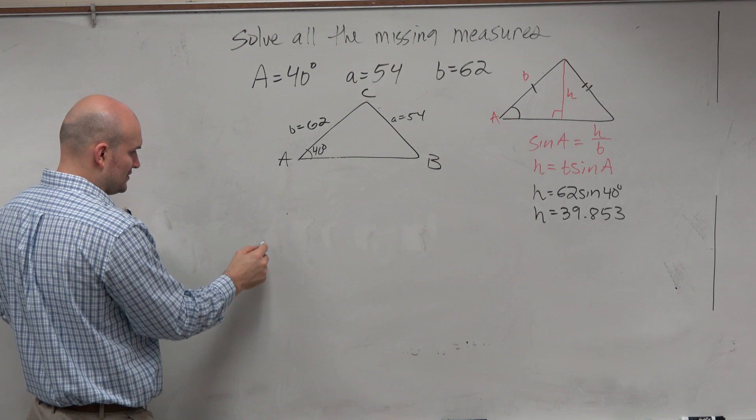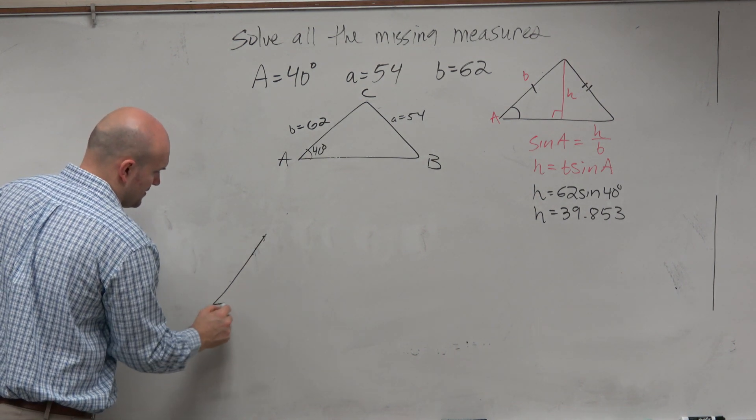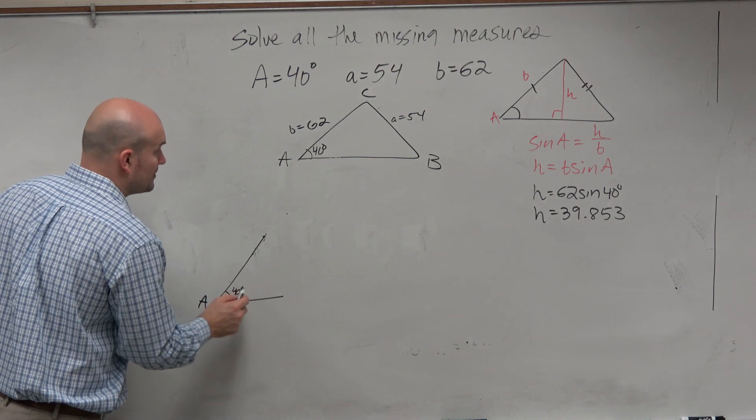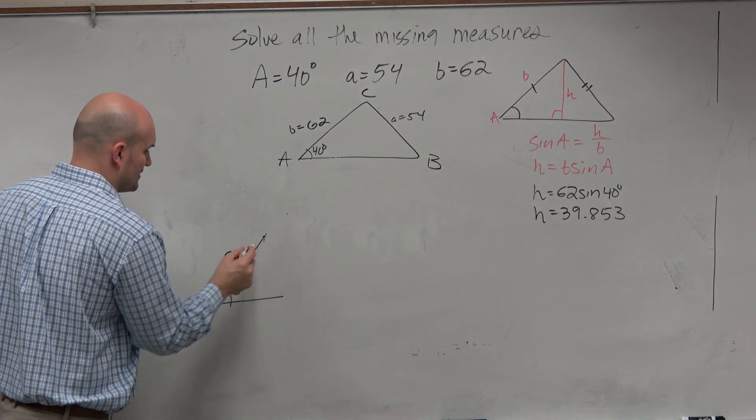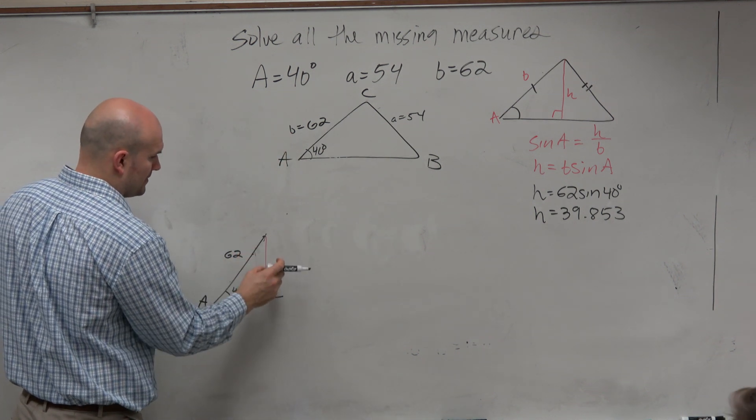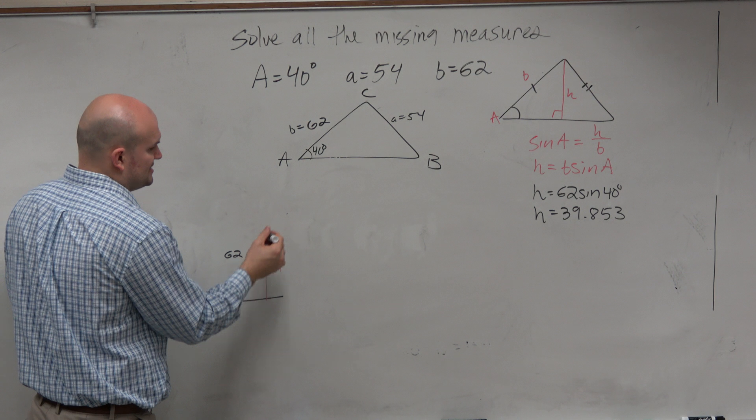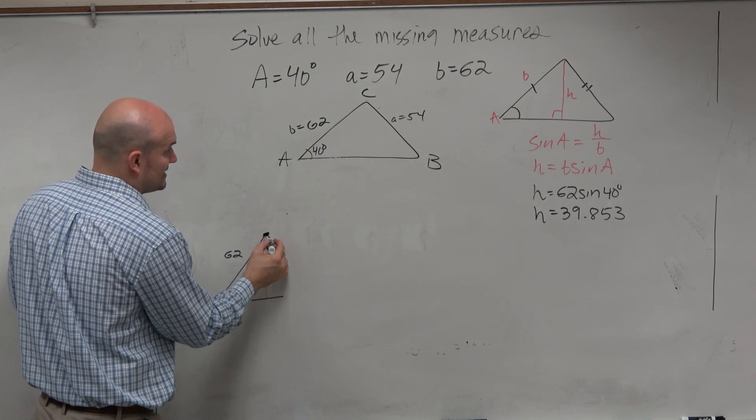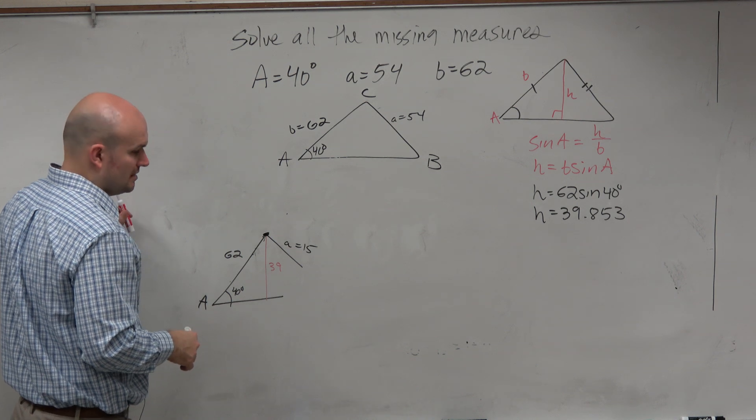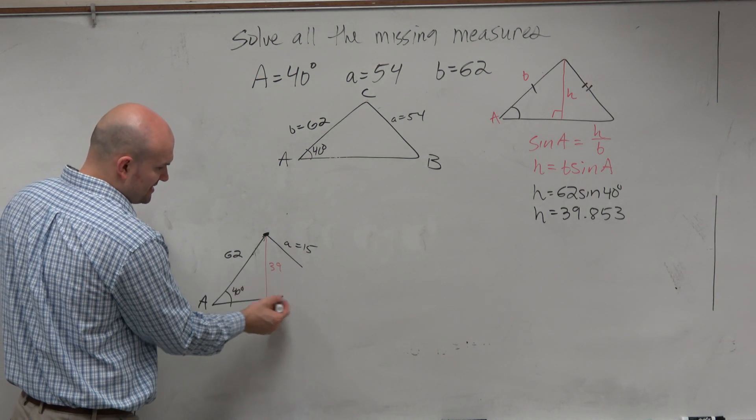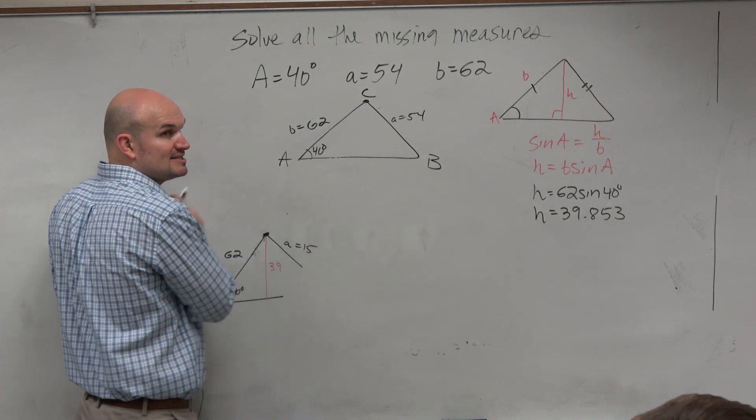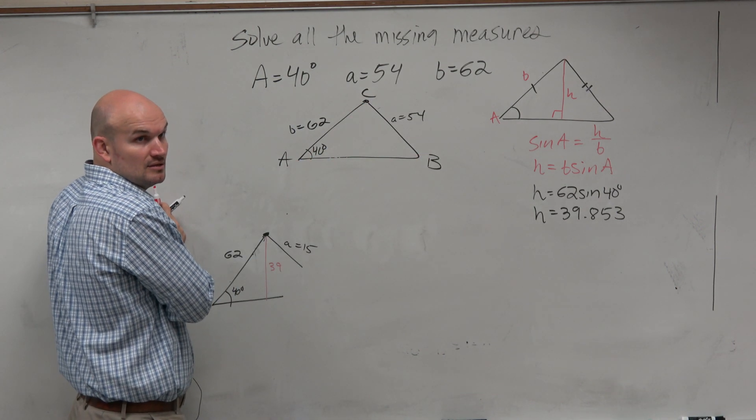Let's make sense of these three cases. So here's A, we know A is 40 degrees. Here's 62. We know that the height is 39. Let's just say for fun that A was 15. Remember, this can be extended as far as it wants. We have no idea how big angle C is or how long side length C is. We have no idea.